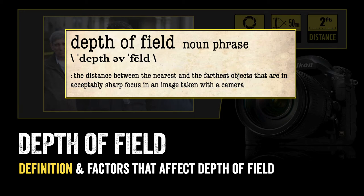In photojournalism, since we can't manipulate the subjects of our images, sometimes the only way to control what the viewer looks at in an image is by making the background or foreground out of focus so that the viewer's eye concentrates its attention on the subject in focus that the photographer wants them to view.